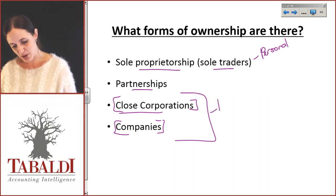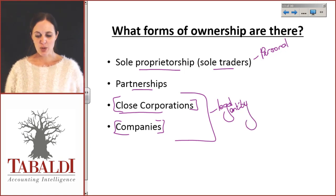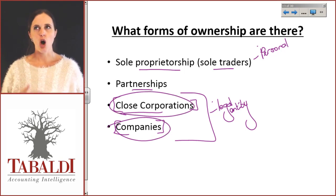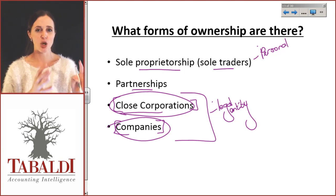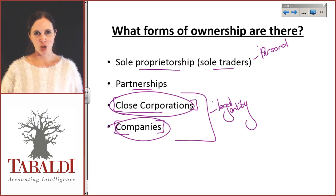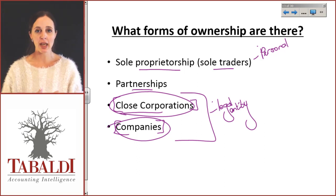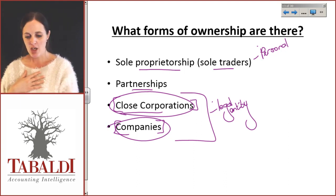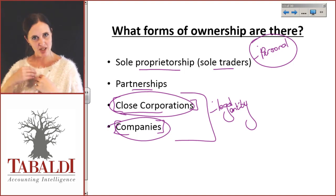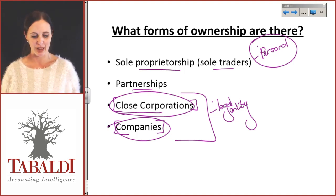Companies and closed corporations differ from the others because they are what we call separate legal entities. The difference is that companies and closed corporations are almost seen as individual people themselves — they have their own legal rights, rights and obligations. They're companies rather than human beings, but they are separate legal entities. So a company is separate from the individual. I may own the company, but as far as the law is concerned, the company is seen as something completely separate from me — whereas my little coffee business on the side is seen as part of me, because it is not a separate legal entity.